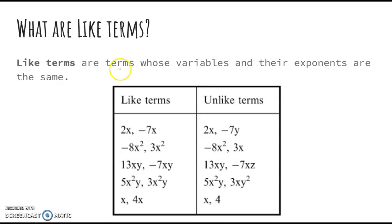So here are some examples of what like terms are. I have 2x and negative 7x. Those are the same because they both have a singular x. Here I have negative 8x squared and 3x squared. Both of those are the same and are like terms because both of them have the same variable and the same exponent, x squared.